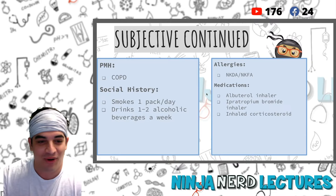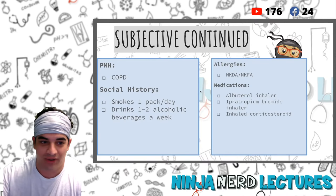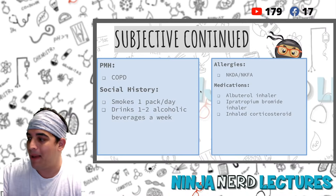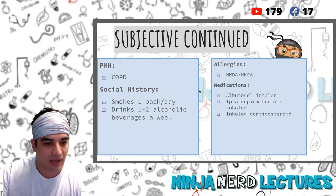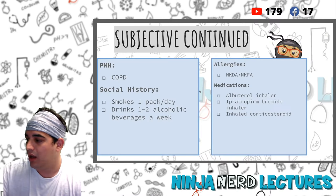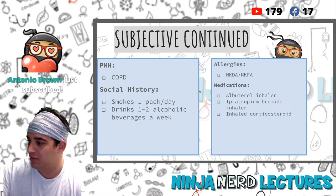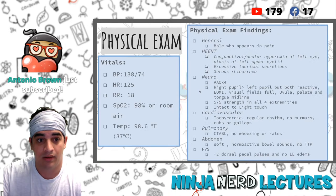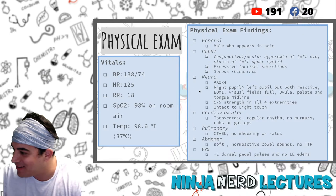His past medical history includes COPD - he smokes about a pack a day. No vomiting. Social history: smokes a pack a day, drinks about one to two alcoholic beverages a week, no known drug or food allergies. Medications include an albuterol inhaler as needed, ipratropium bromide as needed for COPD, and a daily inhaled corticosteroid.